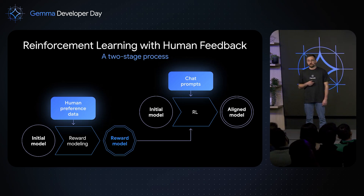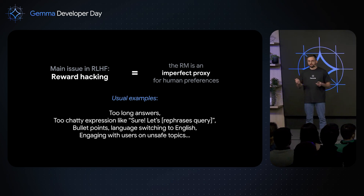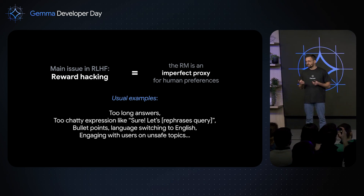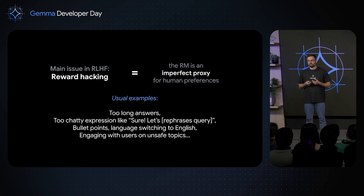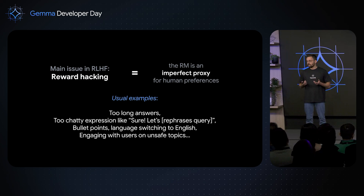First training the reward model, then plugging it into RL. The main issue with RLHF is what we call reward hacking. The reward model is an imperfect proxy for human preferences — it's a numerical annotator that says, for instance, 'plus 1.5 for this answer for that particular prompt.' Typically, if you train for an extended period of time, you start to hack this imperfect judge. For example, human preferences may favor detailed multi-paragraph answers over short ones, and the reward model picks up on that but may over-generalize to 'the longer the better,' causing answers to blow up in length — way too long for a human.